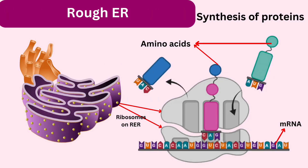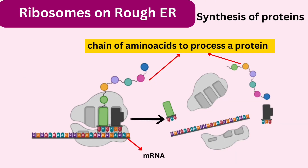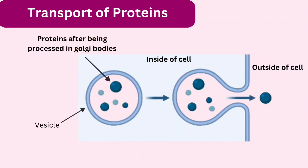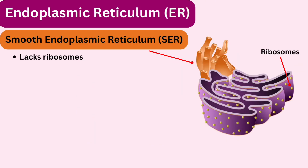The rough ER is actively involved in the synthesis, folding, and modification of proteins. The newly synthesized proteins are often processed and transported to various cellular destinations or secreted from the cell. The smooth ER lacks ribosomes on its surface, giving it a smooth appearance.